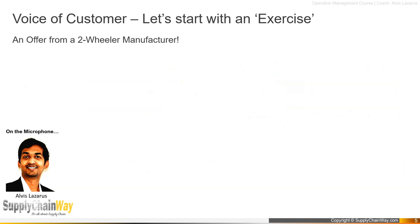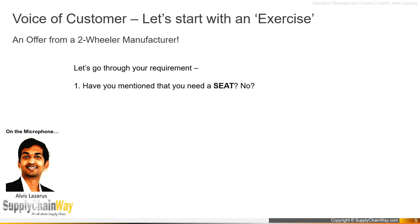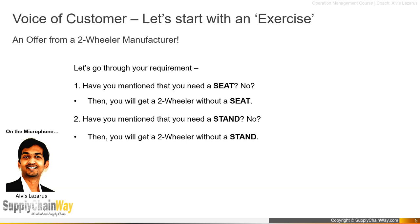Now that you are ready with your requirements, let's quickly go through them. First — have you mentioned that you need a seat in your two-wheeler? No? Then you will get a two-wheeler but there won't be any seat. Number two — have you mentioned that you need a stand? No? Then you will get a two-wheeler without a stand. Have you mentioned that you need a wheel? No? So you may get a two-wheeler with a great powerful engine and great mileage, but there won't be any wheel.